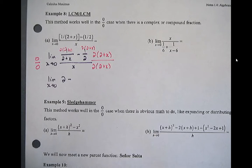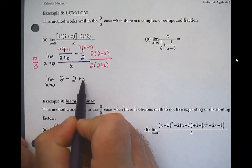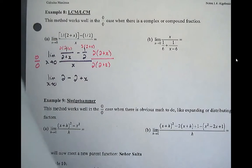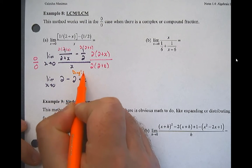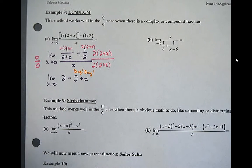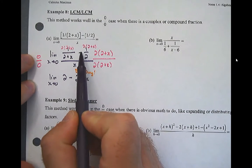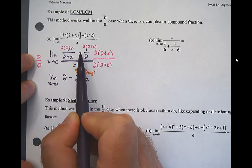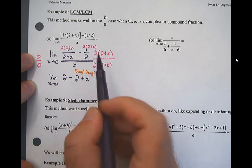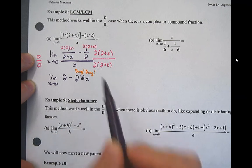Error alert! The two plus x is getting subtracted, which means I need to distribute that negative in there. So this is actually going to become a minus. That gives us negative x over x. The denominator becomes two x times (two plus x) — you don't want to distribute the denominator because you're hoping things will cancel out.